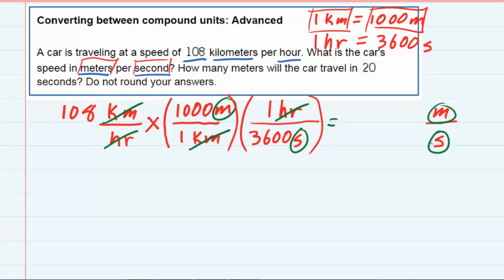So when I do the math here, the 108 times 1,000 gives me 108,000. And in the bottom, the 3600 times 1 is still 3600. My units are now meters per second. And then if we do the division there, that gives me 30 meters per second.